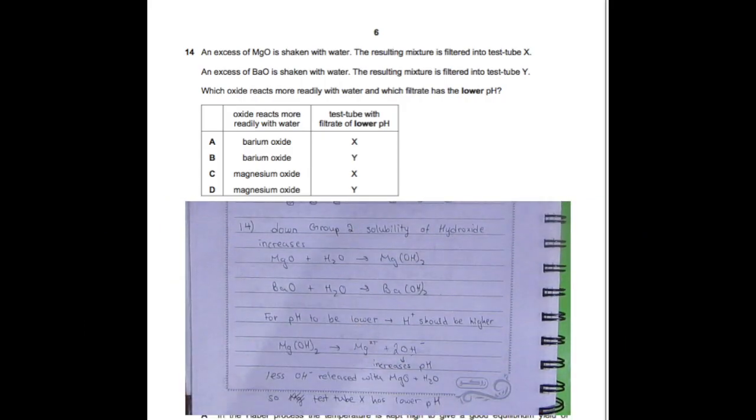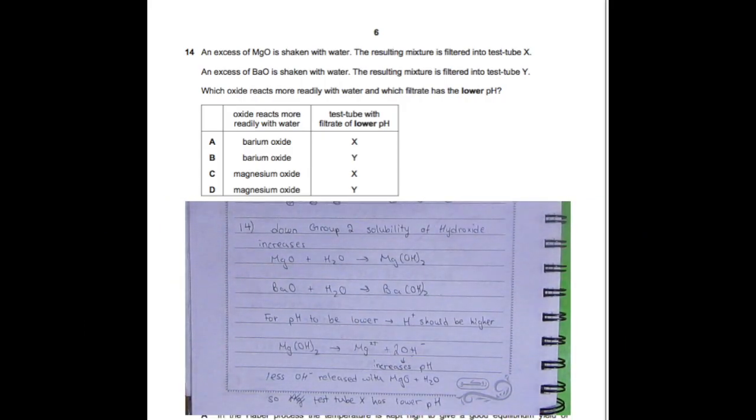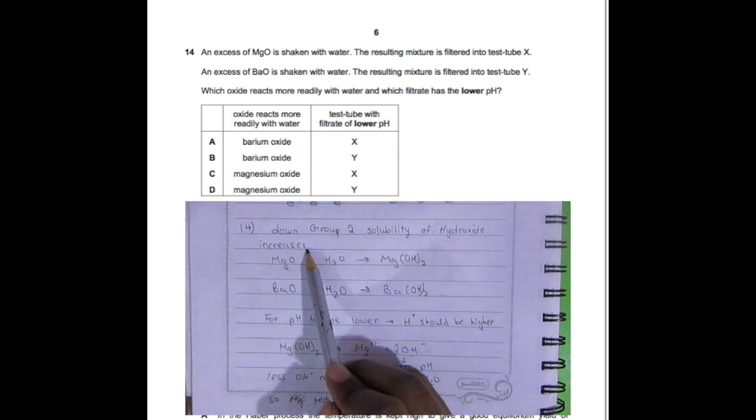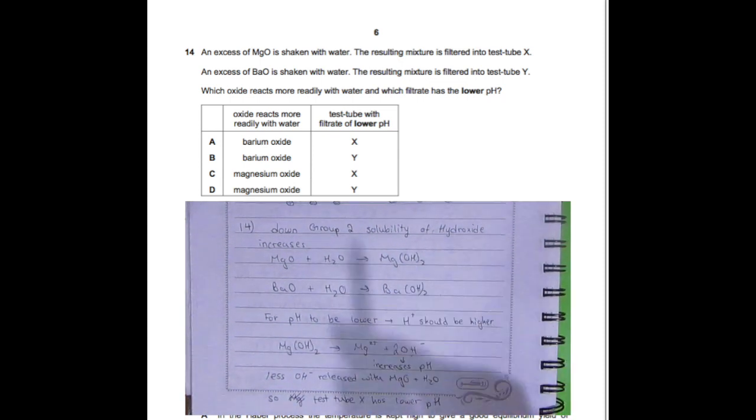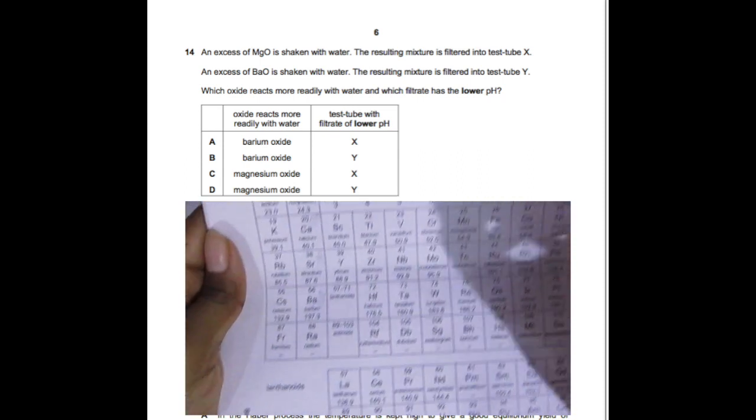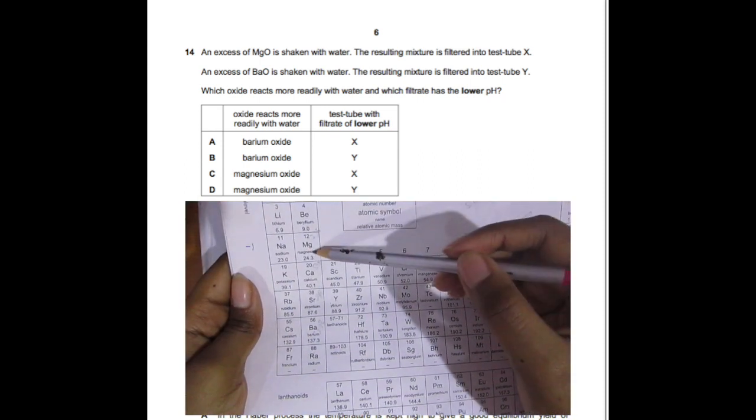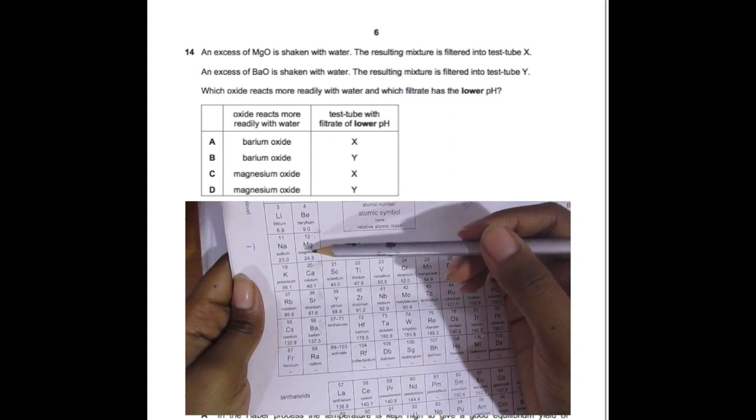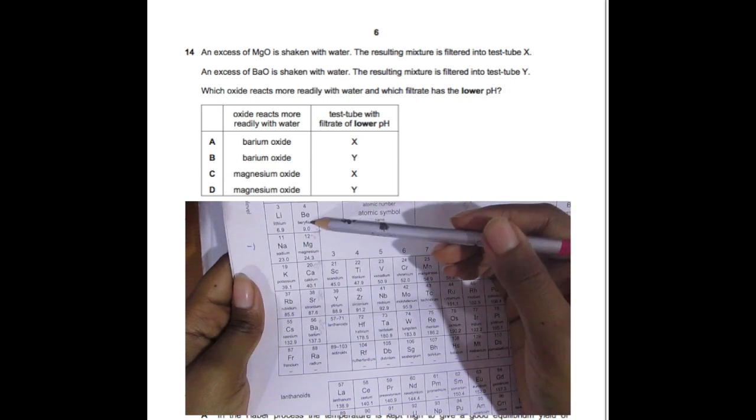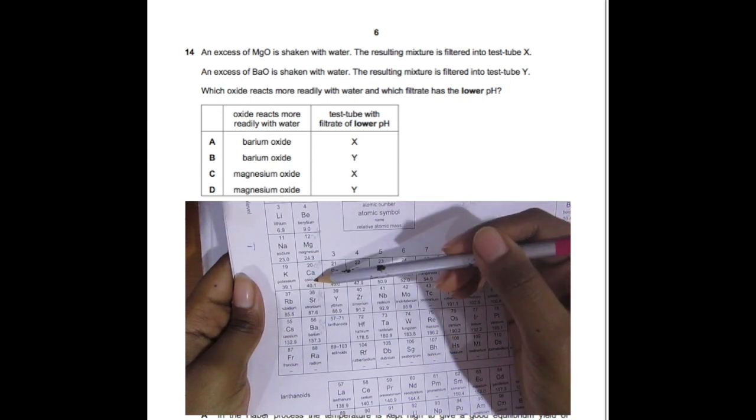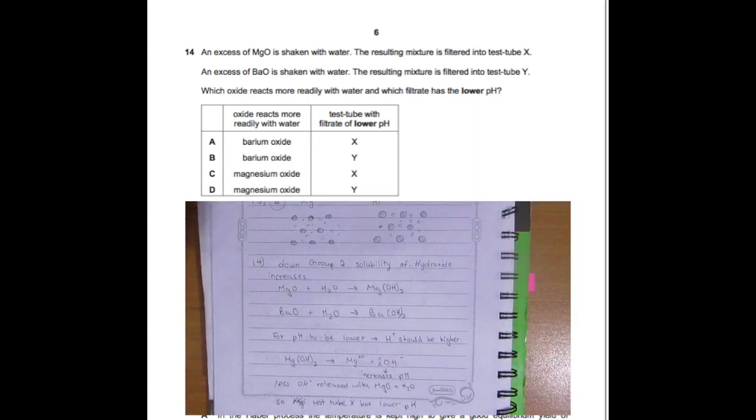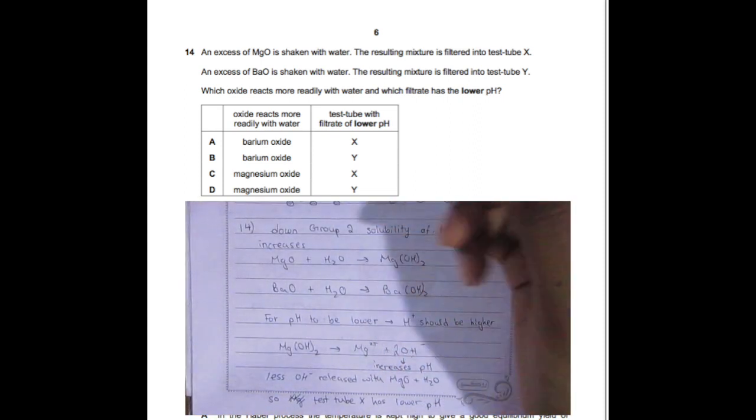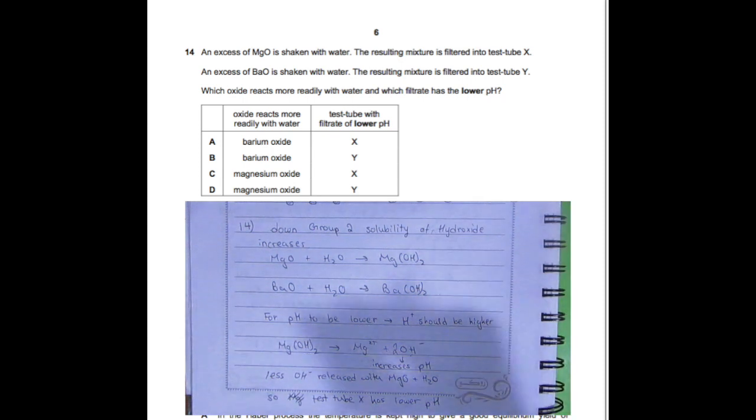Question 14: An excess of magnesium oxide is shaken with water. The resulting mixture is filtered into test tube X, and an excess of barium oxide, same thing into test tube Y. As you go down the group, hydroxide solubility increases. Magnesium oxide is more likely to dissolve than beryllium oxide, and calcium oxide is more likely than magnesium oxide.